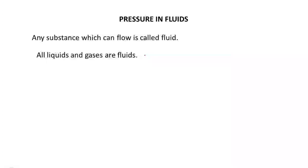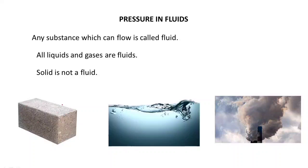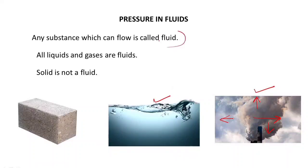Now, pressure in fluids. Any substance which can flow is called a fluid, so all liquids and gases are fluids because they can flow. Solids are not fluids because they cannot flow. A solid has a rigid body and cannot flow. Liquids can flow easily, and gases can flow in any direction — including upwards. That is why liquids and gases are considered fluids, but solids are not.